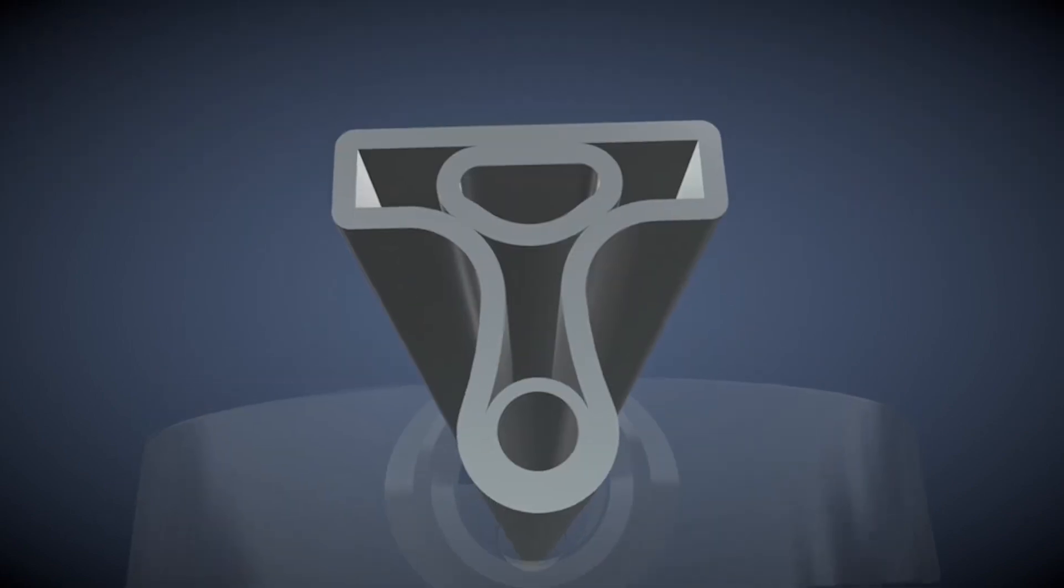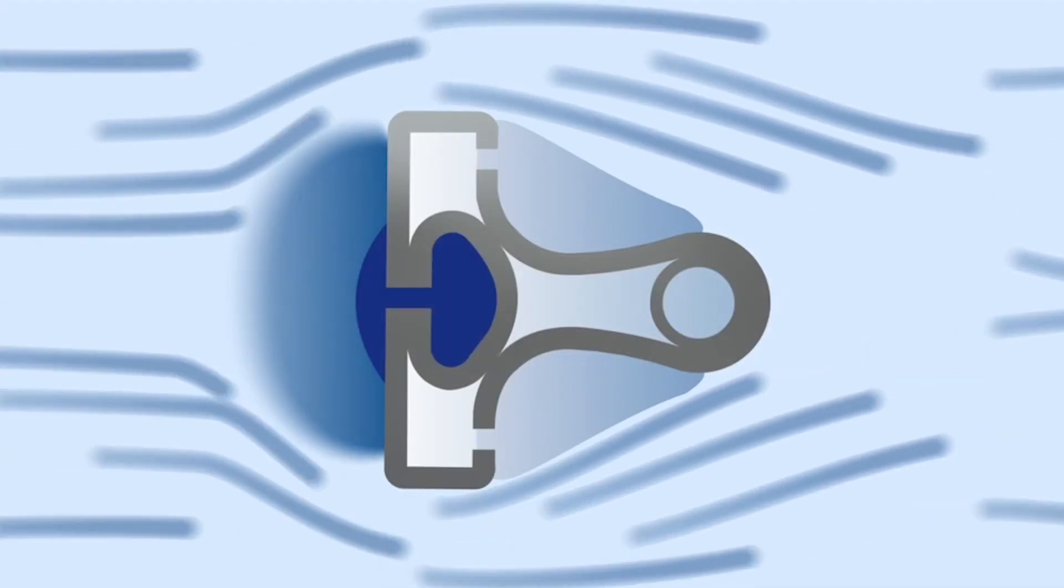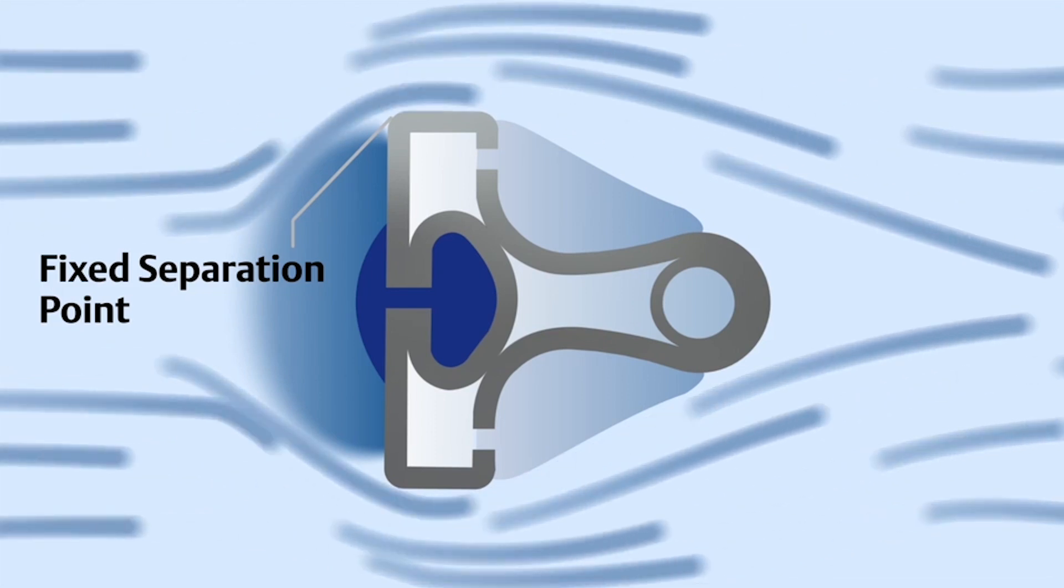Anubar flow meters are equipped with the industry-leading T-shaped sensor. The flat upstream surface of the T-shaped sensor creates a fixed separation point that increases the DP signal and improves performance over a wider flow range.